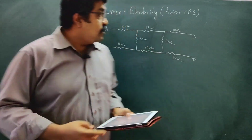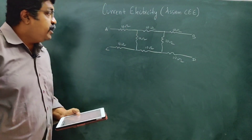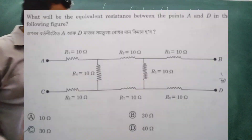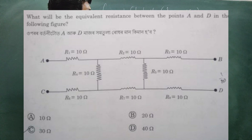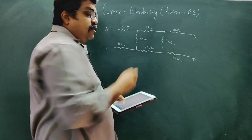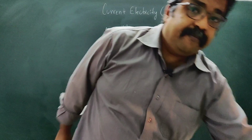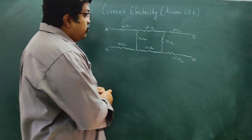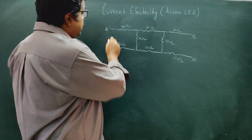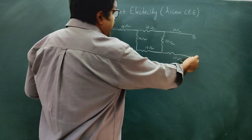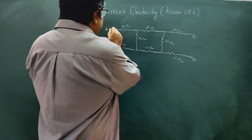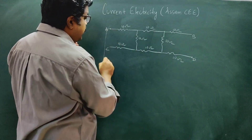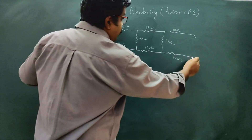So the first question is about the circuit. The circuit from A to D involves resistance. The circuit from A to D has resistance at different levels of resistance.